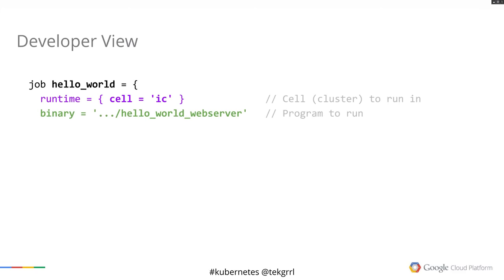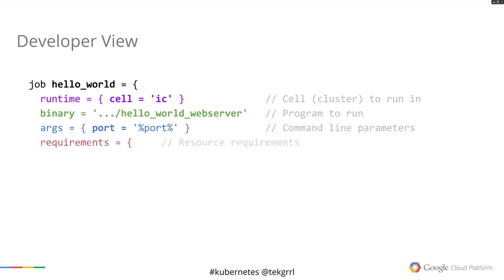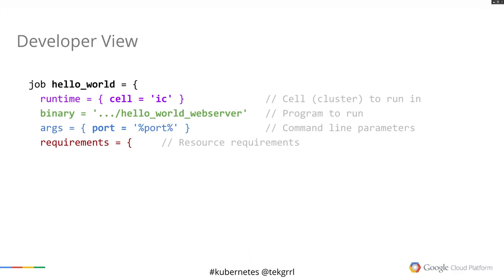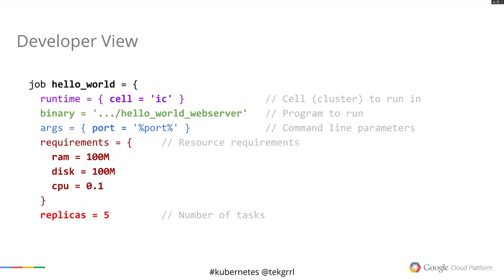Statically linked means they have all of their dependencies built into the binary themselves and don't rely on the underlying runtime. This binary specifically will be about 50 megabytes in size. We can also specify arguments — in this case an environment variable called port, which we pass in when we run it. Then there are resource requirements: how much RAM, disk, and CPU the binary wants. Finally, we can specify how many replicas — the number of tasks within this job. Because this is Google, let's say 10,000. So we can have 10,000 copies of this. This is Google scale.